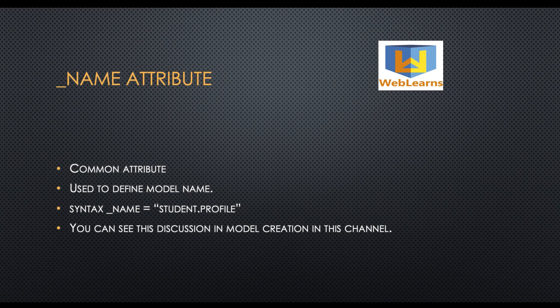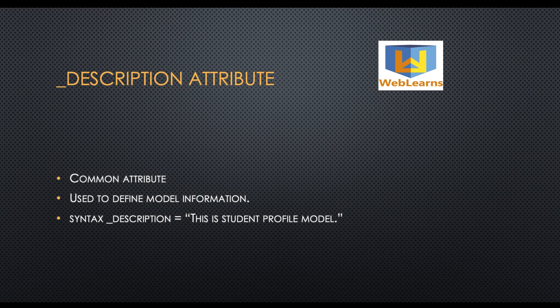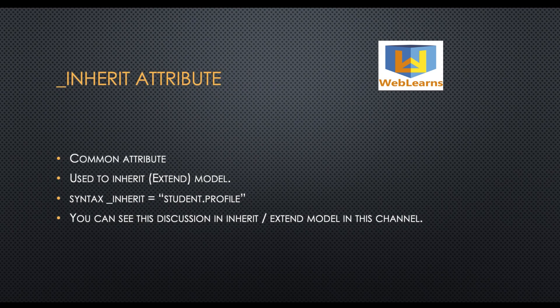The next attribute is underscore description. This attribute is used to provide information about a model. For example, if you are creating any model, you can define a description so other developers can see what the purpose of that particular model is. That's when we use the underscore description attribute.